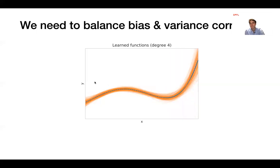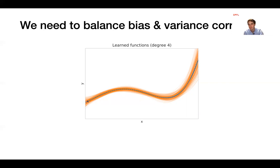From these two extreme examples, we see that we need to balance both bias and variance by considering models of intermediate complexity — for example, a polynomial of degree 4. This achieves a very good bias (the average prediction is very close to the ground truth) and very few fluctuations across different training sets, giving a small variance. The predictions are very consistent.